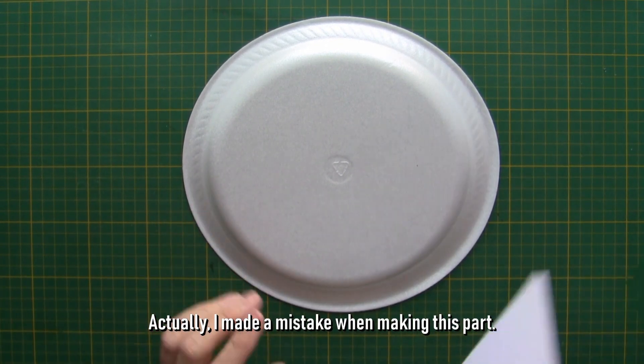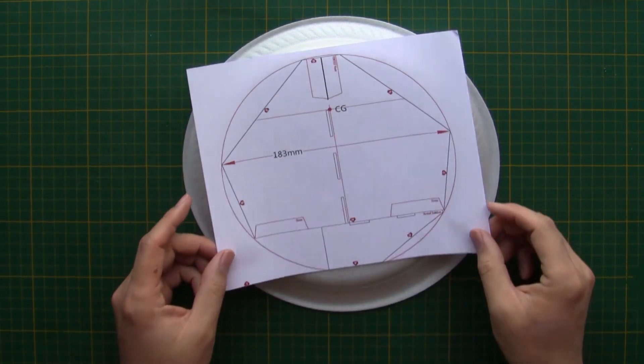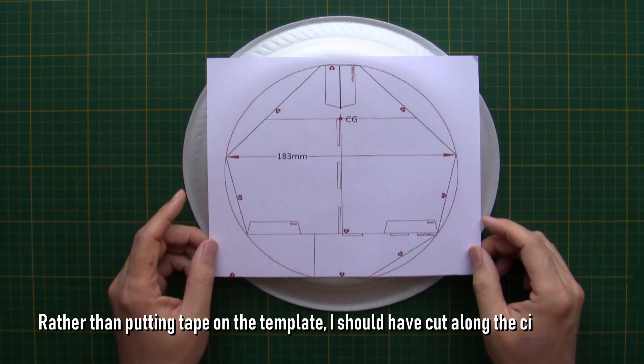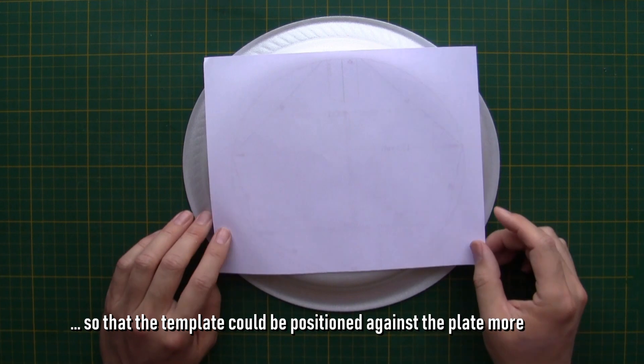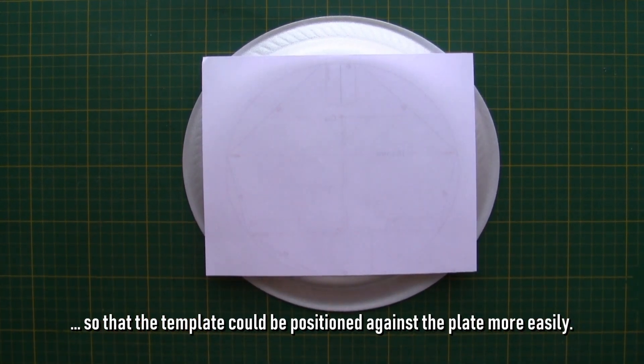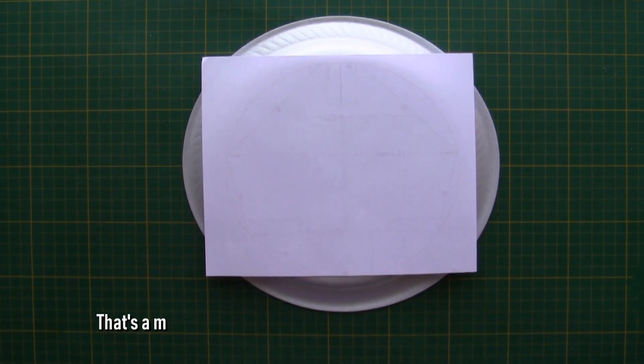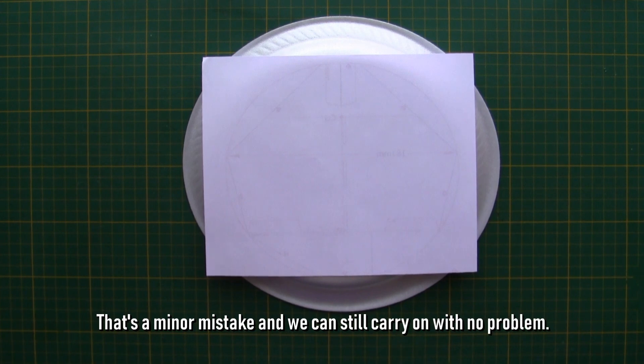Actually, I made a mistake when making this part. Rather than putting tape on the template, I should have cut along the circle first, so that the template could be positioned against the plate more easily. That's a minor mistake and we can still carry on with no problem.